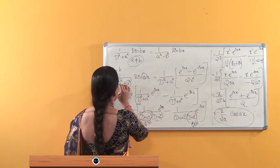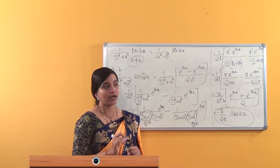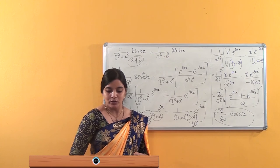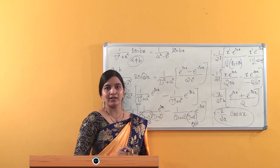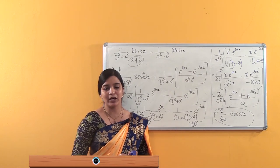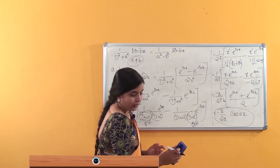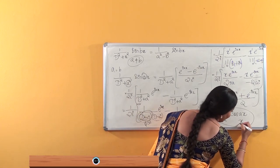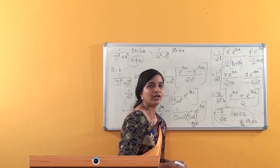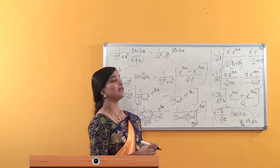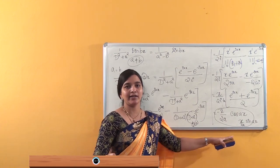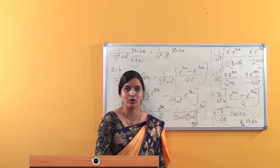Now, if you have 1/(D²+a²)·cos(ax), the formula can be derived in the same way, and at the end you will get x/(2a)·sin(ax). You have to solve it and check whether you get the same solution. Thank you.